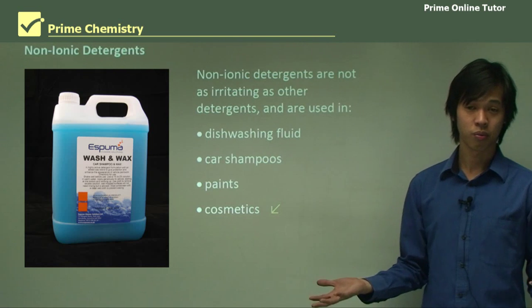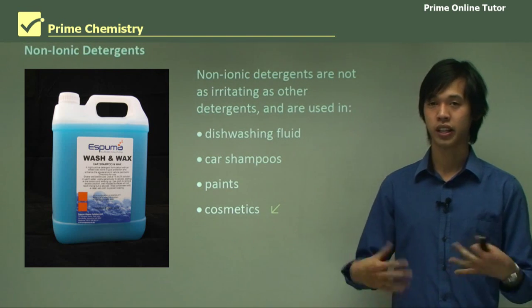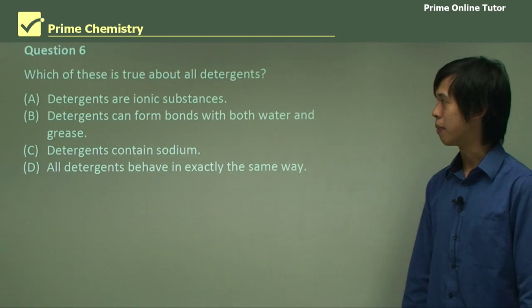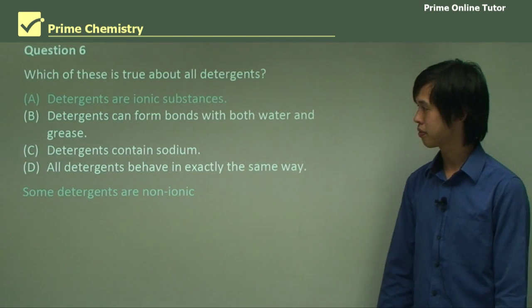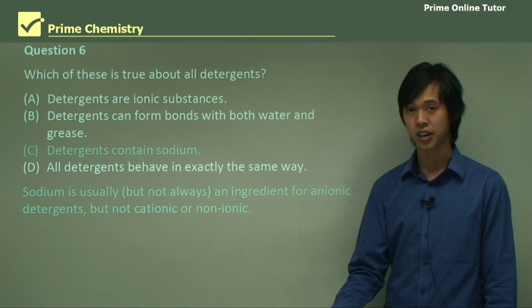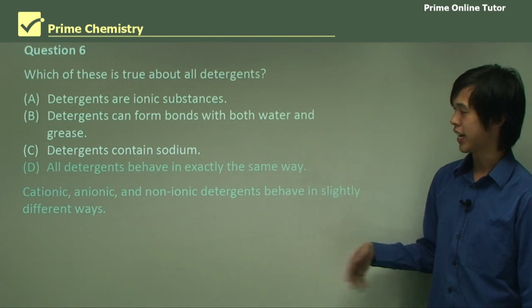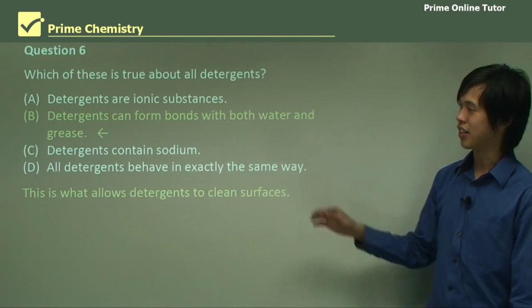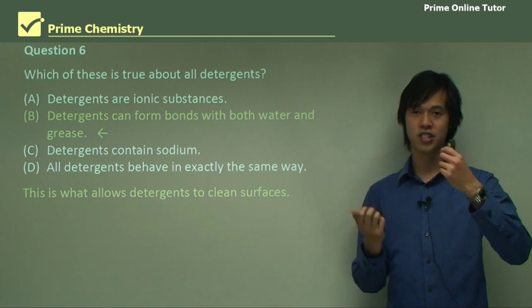That concludes our talk on what different synthetic detergents are — anionic, cationic, and non-ionic surfactants and their applications. Now the question segment. Which is true about all detergents? Detergents are ionic substances — no, because we've talked about non-ionic detergents. Detergents contain sodium — sodium is usually but not always an ingredient for anionic detergents, but definitely not for cationic or non-ionic. All detergents behave in exactly the same way — no, cationic, anionic, and non-ionic detergents behave differently because of the way they're charged. The correct answer: detergents can form bonds with both water and grease — that's what allows them to work, forming bonds with the grease and the water, and when you agitate them, it pulls the oil apart.